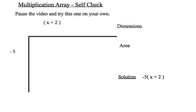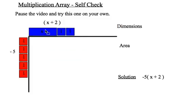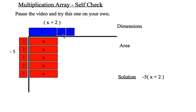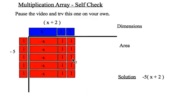So, here we go. I'll model this quickly. There's my negative 5. X plus 2. Negative 1 times x. Negative x. Negative 1 times 1. Negative 1. And I need to repeat that several times. So, I can see my solution here is negative 5x minus 10.